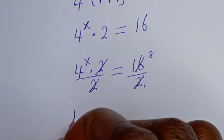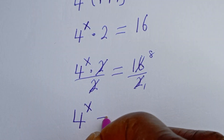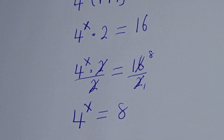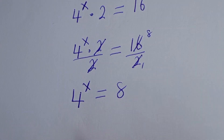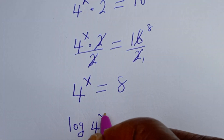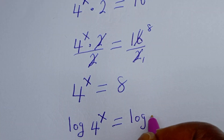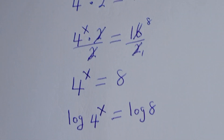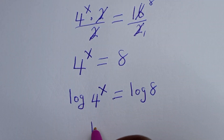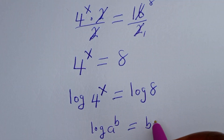Then here, 4 to the power of s is equal to 8. We can take the log of both sides: log of 4 to the power of s is equal to log 8. Now take note that if you have log a to the power of b, this is equal to b times log a.